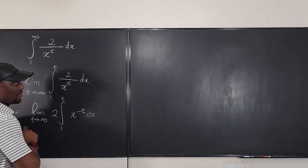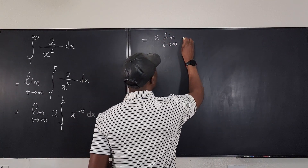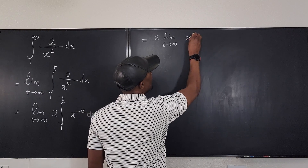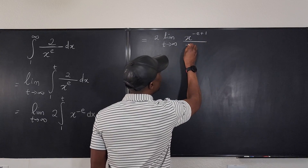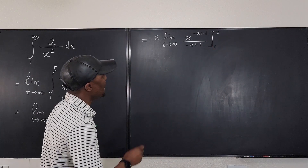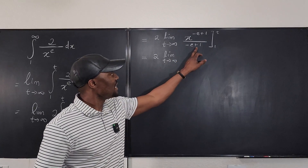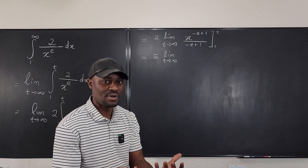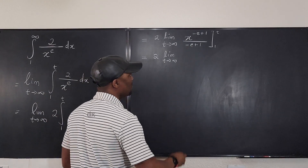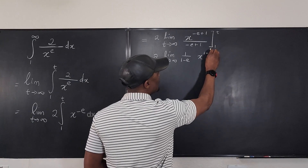I can move the 2 in front of the limit, so this is equal to 2 times the limit as t goes to infinity. If we integrate x to the negative e, it's going to be x to the negative e plus 1, over negative e plus 1. Our boundaries are from 1 to t. Note that negative e plus 1 is a number — the same as 1 minus e, or 1 minus 2.718 — but since it's irrational, we keep it as 1 over 1 minus e, times x to the 1 minus e.